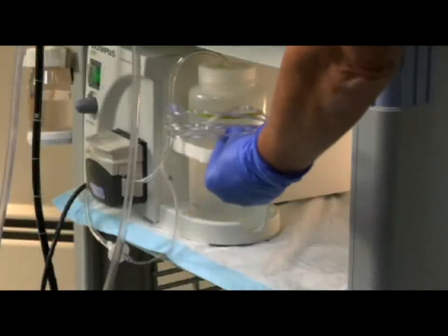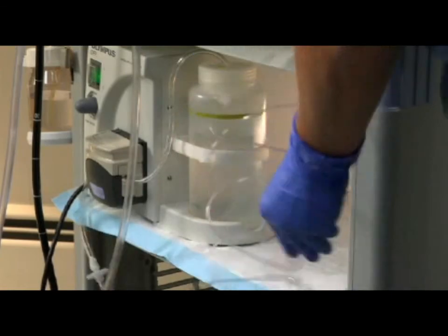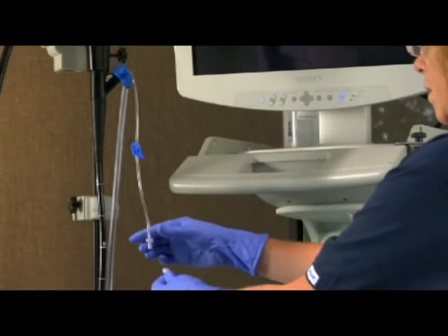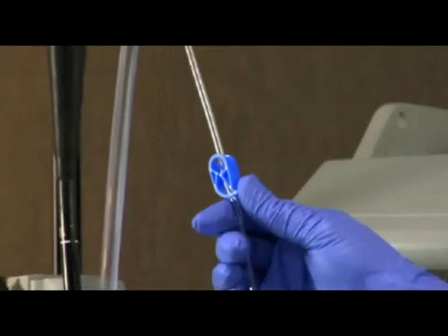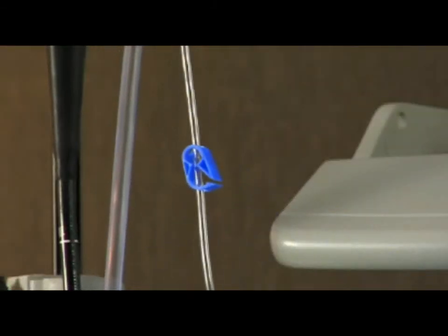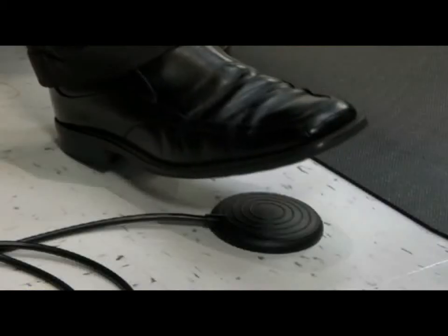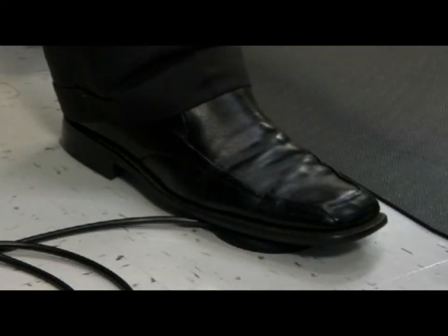When using a water pump for irrigation, the nurse will connect the water pump's tubing to the BioVac device's irrigation line. Open the blue pinch clamp on the BioVac device's irrigation line. The physician can control irrigation by operating the foot pedal on the water pump.